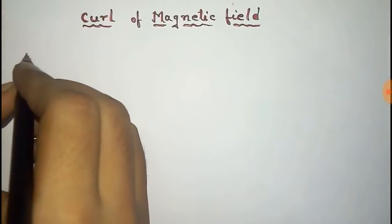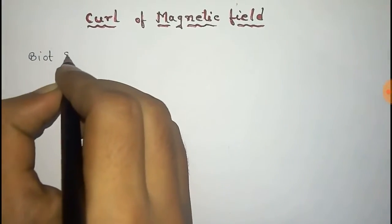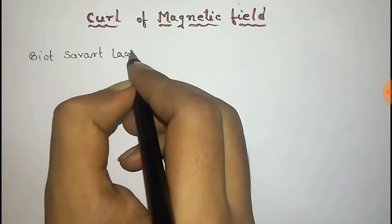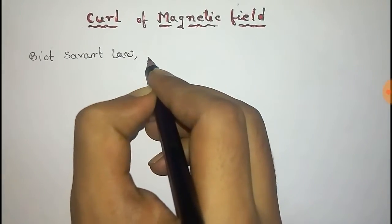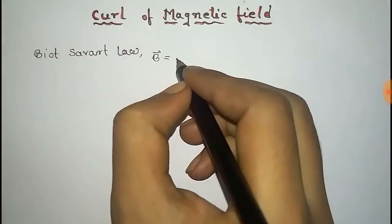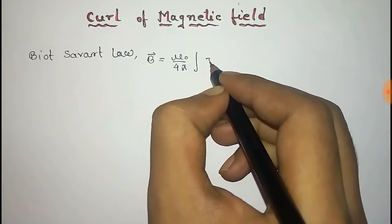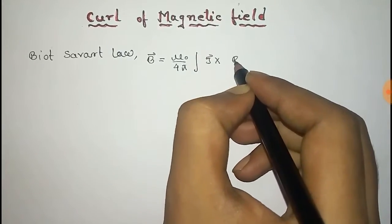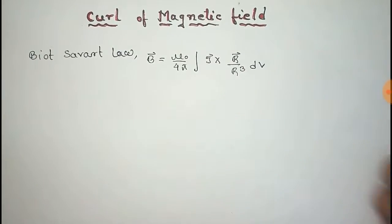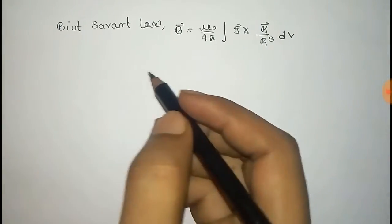We have to find the curl of the magnetic field. For this we use the Biot-Savart law: the magnetic field B vector is equal to μ₀/4π times the integration of J cross r-vector by r-cubed, into dv.